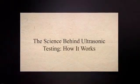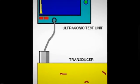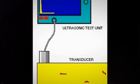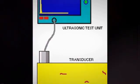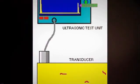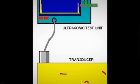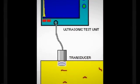The Science Behind Ultrasonic Testing: How It Works. Ultrasonic testing is a non-destructive testing method that uses high-frequency sound waves to detect flaws or defects in materials, particularly welds. The process involves sending ultrasonic waves through the material being tested and analyzing the reflected waves to identify any abnormalities.